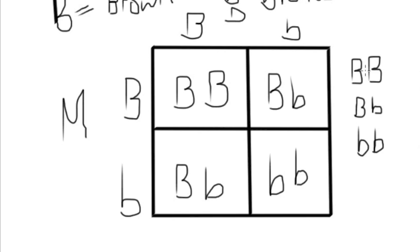This top one — big B big B — is homozygous dominant, or we could say purebred for brown hair. This one — big B little B — we could call heterozygous or hybrid. And then this bottom one — little B little B — we could call homozygous recessive, or purebred for blonde hair.